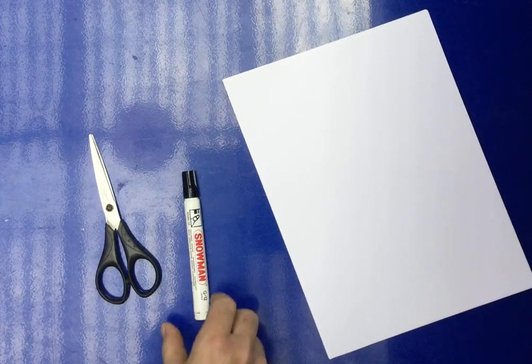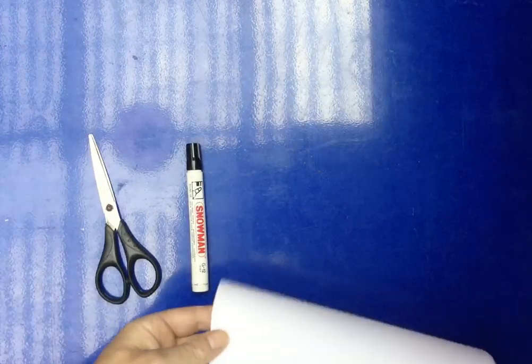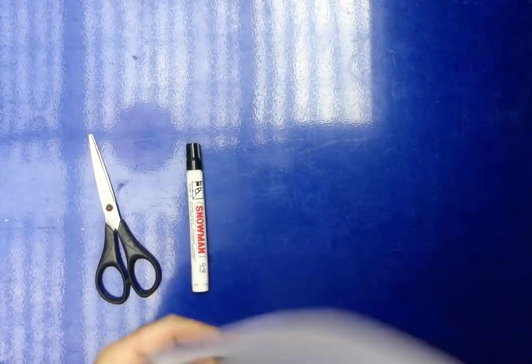So the things that you need to make these cards are scissors, a marker or a pencil, and five sheets of paper. You say I have one, two, three, four, five.